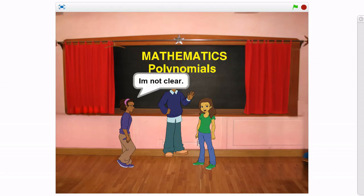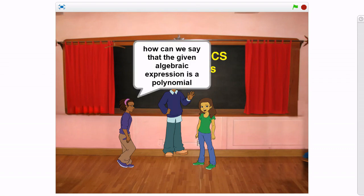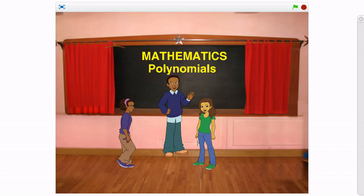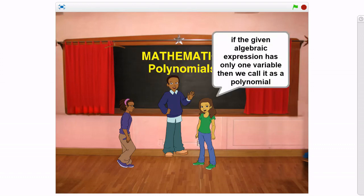I am not clear. How can we say that the given algebraic expression is a polynomial? If the given algebraic expression has only one variable, then we call it as a polynomial.